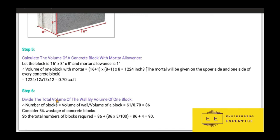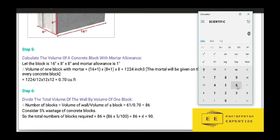Step 6: divide the total volume of the wall by the volume of one block. Number of blocks = volume of wall ÷ volume of one block. The volume of wall is 61 cubic feet and the volume of one block is 0.70 cubic feet. Calculating on the calculator: 61 ÷ 0.70 = 86 number of blocks.